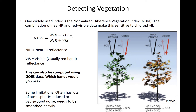NDVI ranges from negative one to one. A value over 0.5 usually indicates lush vegetation. Values from 0.2 to 0.5 represent sparse vegetation generally, and under 0.2 includes non-vegetated areas such as water, deserts, ice, or man-made structures. Low NDVI can also represent vegetated areas with dead vegetation or brown leaves.